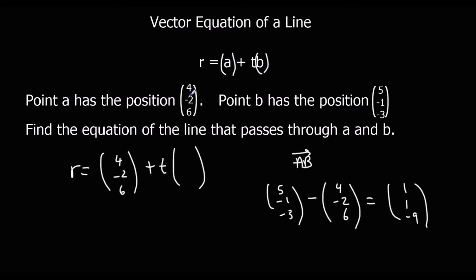So from a to b we go up 1, up 1, down 9, so we've got (1, 1, -9), and that is the vector equation of that line.